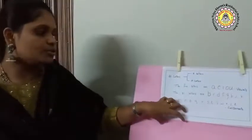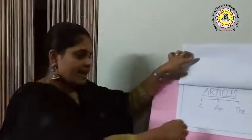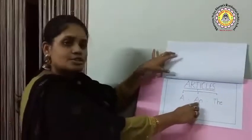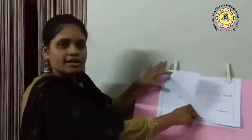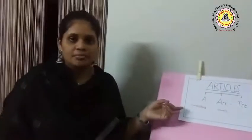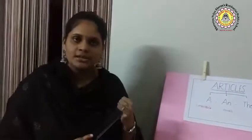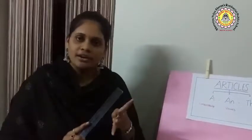Let us go to articles again. A and AN are always used to talk about a person, a place, an animal, and a thing. These articles talk about singular nouns — that means about one person, one place, one animal, and one thing.